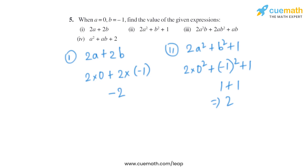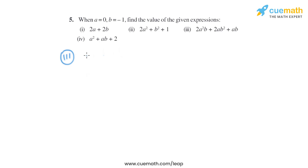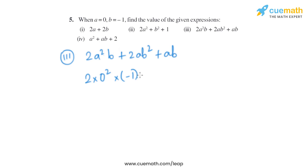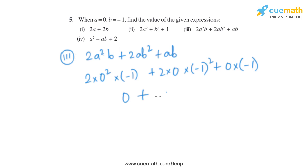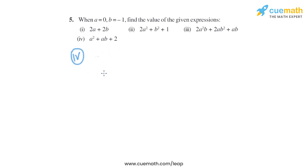In the third part, the expression given is 2a²b + 2ab² + ab. Putting in the values, it becomes 2 into 0² into minus 1, plus 2 into 0 into minus 1², plus 0 into minus 1. In the first term we are multiplying by 0, so it becomes 0. The second term also multiplies by 0, so it becomes 0. The third term also becomes 0. So the final answer is 0.